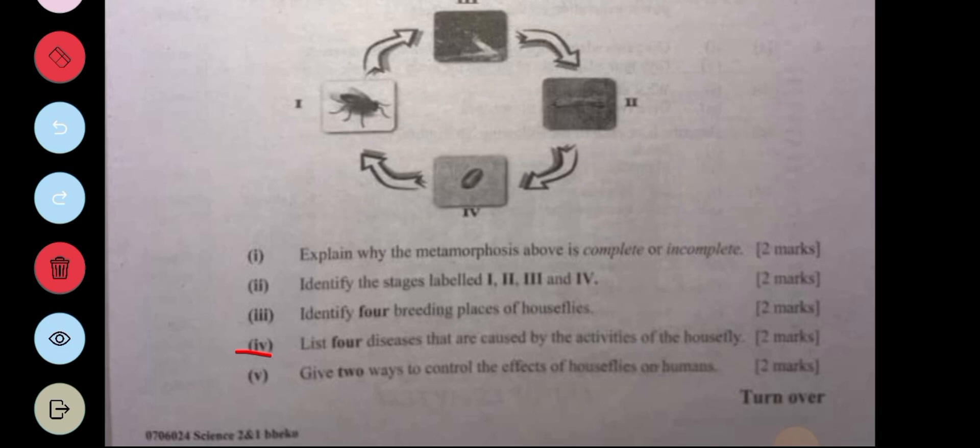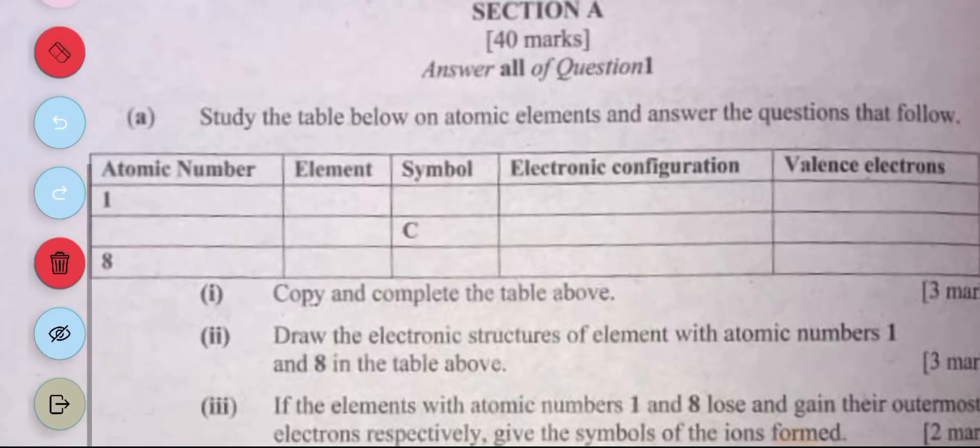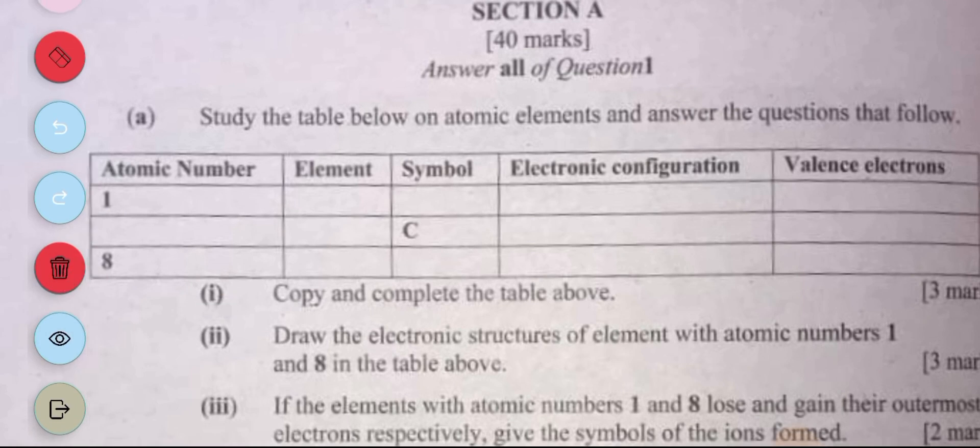Now you have a table here. The question says copy and complete the table above. You are supposed to draw this diagram. You have an atomic number of one here. The element with atomic number one is hydrogen. The symbol is capital H. The electron configuration is 1. The valence electron is also 1. Valence electron simply means the number of electrons found on the outermost shell.